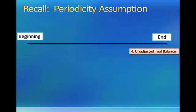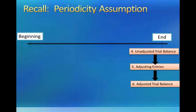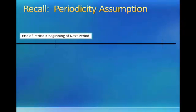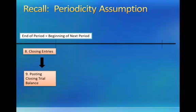First, we need to prepare the unadjusted trial balance, then the adjusting entries, then the adjusted trial balance, and then finally we can prepare our financial statements. After we prepare our financial statements, we've accomplished our mission for this accounting period, but the end of the accounting period becomes the beginning of the next accounting period. Before we can start that next accounting period, there are two more things that we need to do: first, we need to prepare closing entries, and then we need to prepare a post-closing trial balance. Both of these steps cause people that study accounting a little bit of frustration, but after this module, it should be no problem.